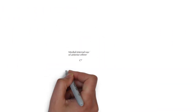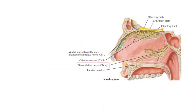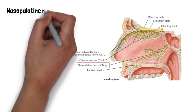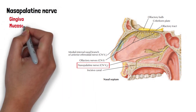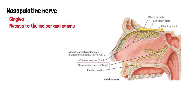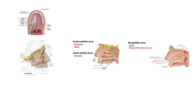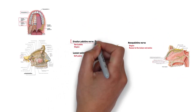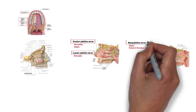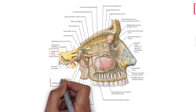The nasopalatine nerve comes from the nasal cavity through the incisive canal and fossa to reach the inferior surface of the hard palate. It supplies the gingiva and mucosa to the incisor and the canine region. All of these nerves — the greater and lesser palatine nerves and the nasopalatine nerve — are all branches of the maxillary division of the trigeminal nerve.